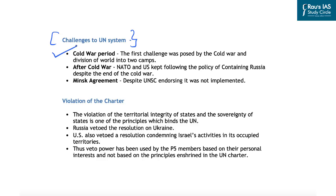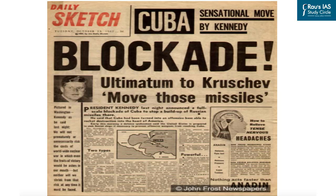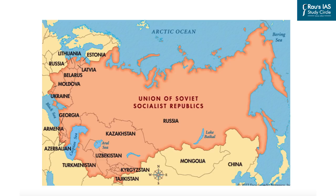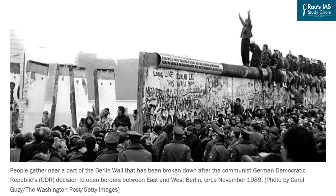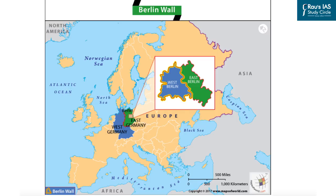The creation of these two camps posed challenges to the UN system because many times both camps were on the verge of war. One example of the peak of Cold War tension threatening international security was the Cuban Missile Crisis. In the 1990s, the USSR disintegrated, marking the end of the Cold War. A symbolic representation was the fall of the Berlin Wall, as Germany had been divided — East Germany controlled by the USSR and West Germany by the USA-led capitalist camp.